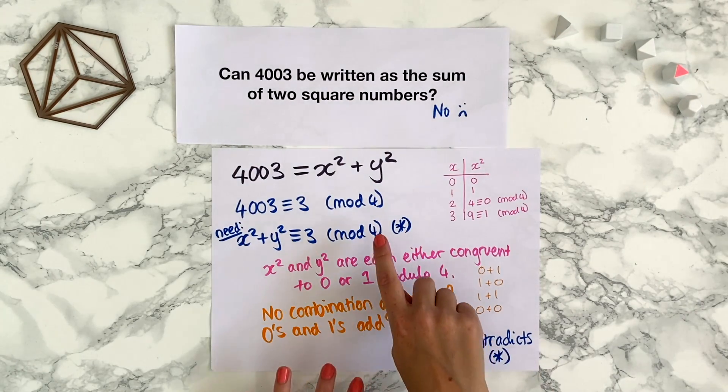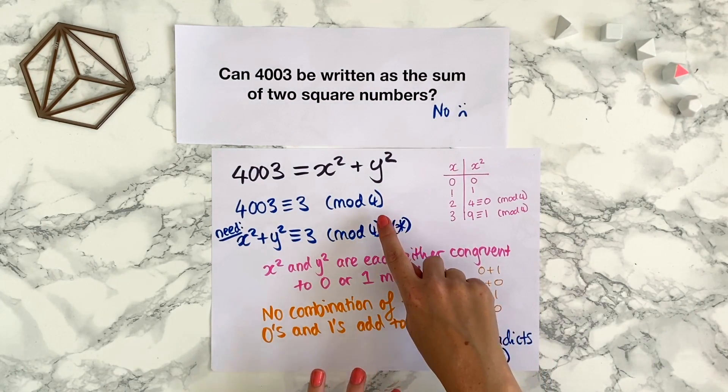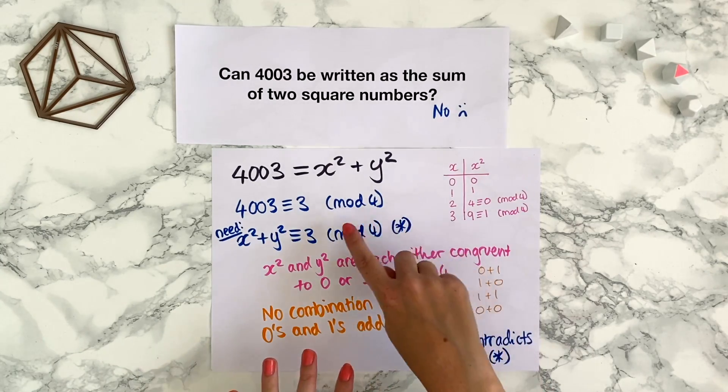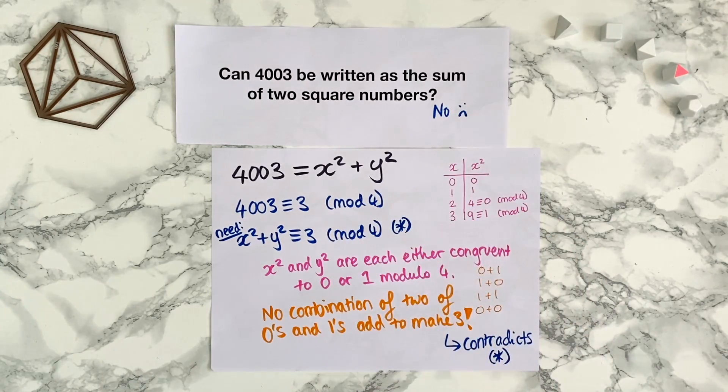So we can use modular arithmetic to prove things as well as do calculations. You might be wondering how I knew modulo 4 would work. Well, if modulo 4 hadn't worked, we could have tried other modulos and seen if we could get a contradiction in a similar way.